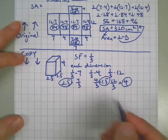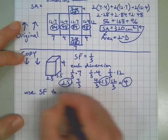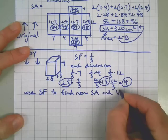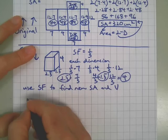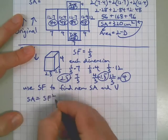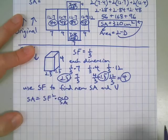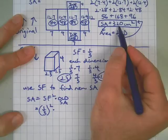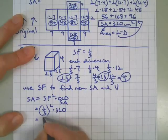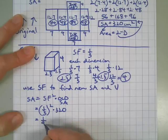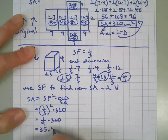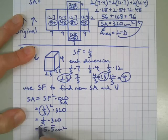Next, I want to use the scale factor to find new volume, new surface area. We'll do that first because it's two dimensional. Surface area. We're going to take the scale factor squared and multiply it by the old surface area. The scale factor is one third squared. Old surface area is right here, 320. So we can bring that down and use it. One third squared is one ninth, because one times one is one, three times three is nine. Times 320. New surface area is about 35 and a half square centimeters.